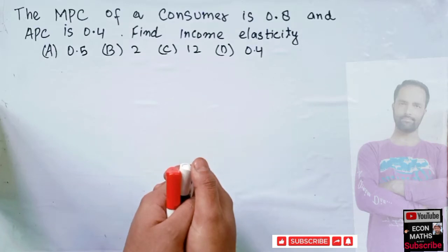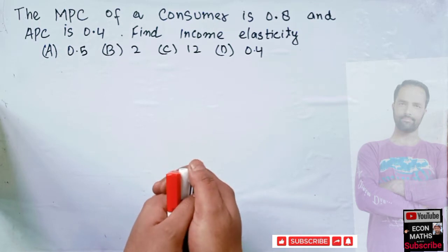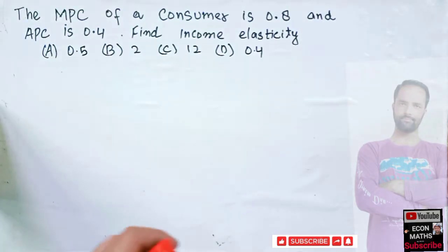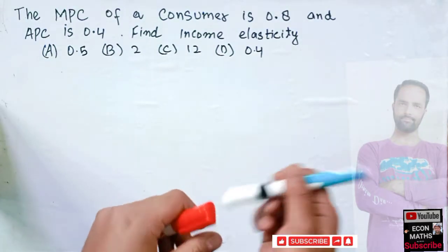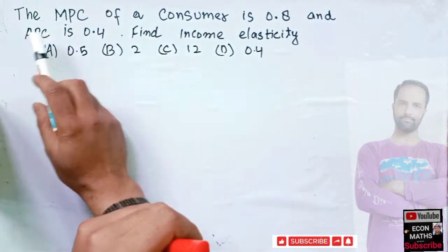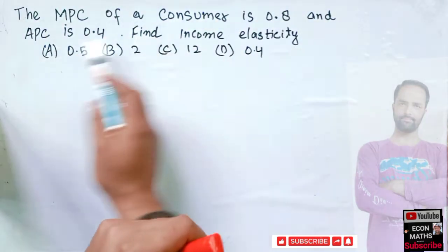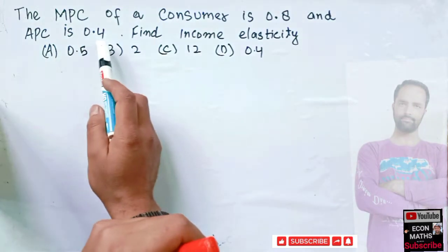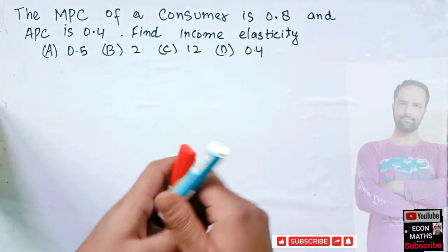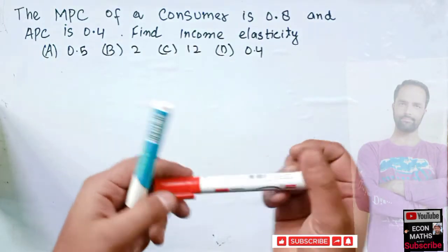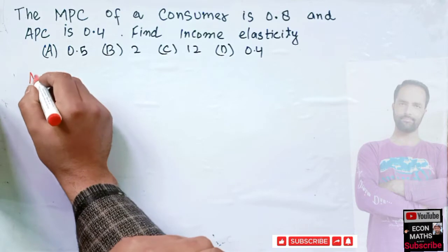In this video we will try to calculate income elasticity from MPC and APC. This is a rectification video to the earlier one where I miscalculated the income elasticity. The question is: the MPC of a consumer is 0.8 and APC is 0.4 — find income elasticity.